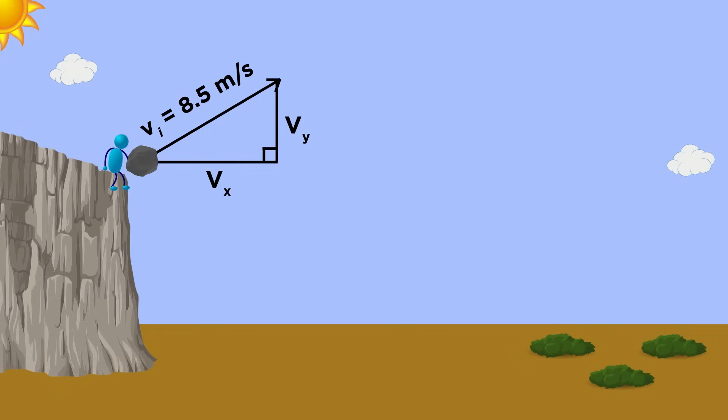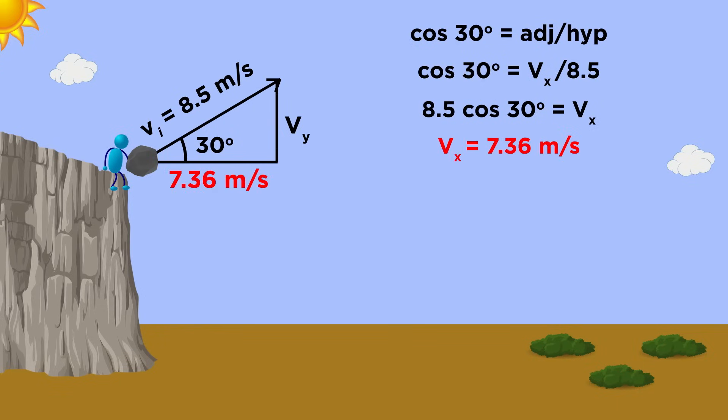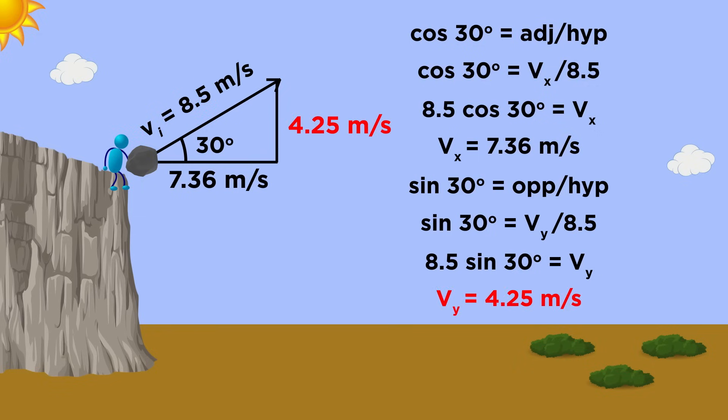To find out the magnitude of these vectors, we just do a little trig. We know that the cosine of 30 will be equal to the adjacent leg over the hypotenuse, which means 8.5 cosine 30, or 7.36, will be the initial velocity in the x direction. We also know that the sine of 30 will be equal to the opposite leg over the hypotenuse, so 8.5 sine 30, or 4.25, will be the initial velocity in the y direction.